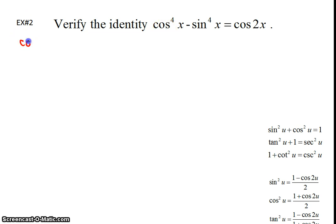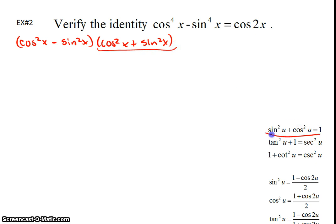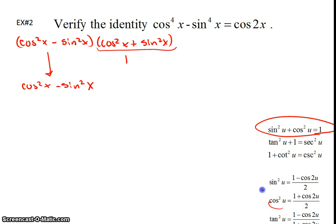It factors as cosine squared of x minus sine squared of x, times cosine squared of x plus sine squared of x. Looking at the Pythagorean identities, the right factor — cosine squared plus sine squared — equals 1. So what remains is just cosine squared of x minus sine squared of x. And from the double angle formulas, both the sine squared and cosine squared forms give you cosine of 2x.